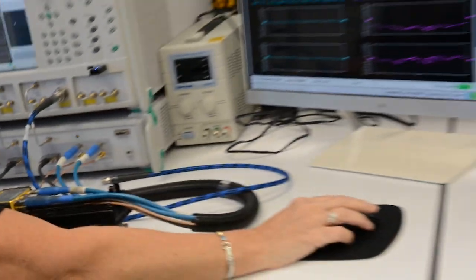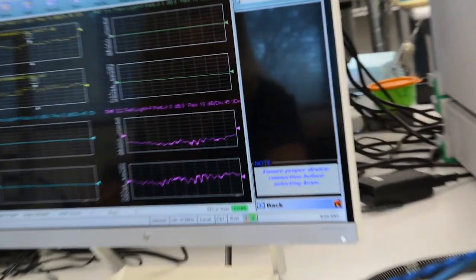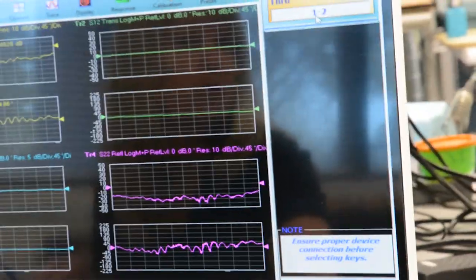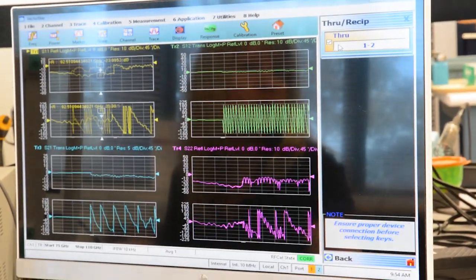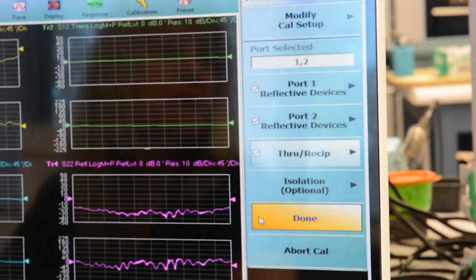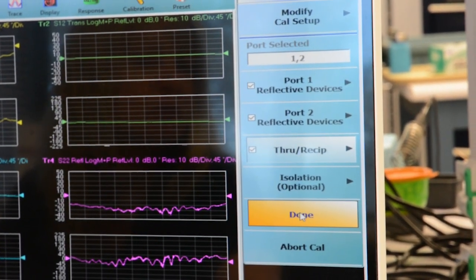So here we'll hit thru, we have the thru, it's going from port 1 to port 2. Click on, we have our check mark, hit that, and here it's done.